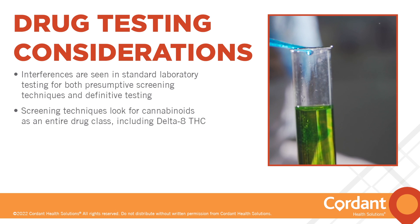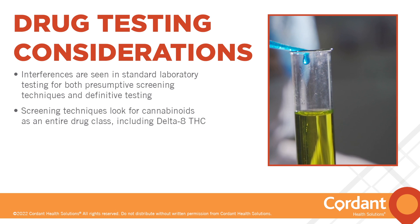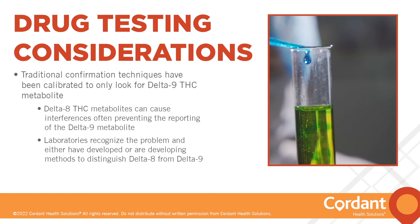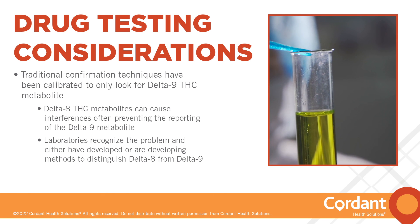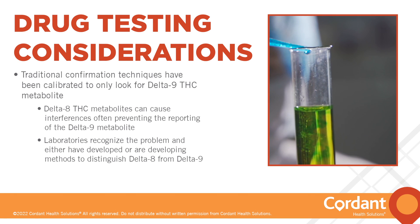The presumptive screen for marijuana may result in a presumptive positive from delta-8 THC. For confirmations, while traditional drug testing confirmation techniques have been calibrated to only look for delta-9 THC metabolite, delta-8 THC metabolites can cause interferences, often preventing the reporting of the delta-9 metabolite. Most laboratories recognize the problem and either have developed or are developing methods to distinguish delta-8 from delta-9 THC.